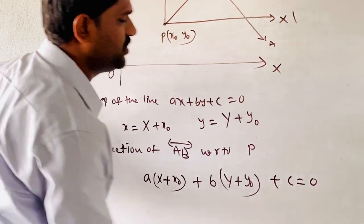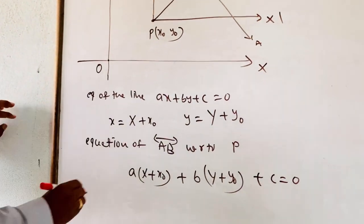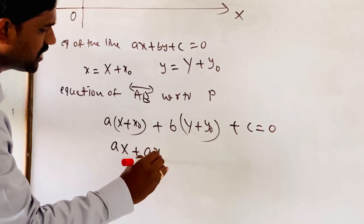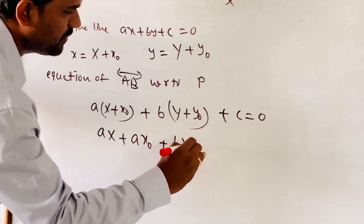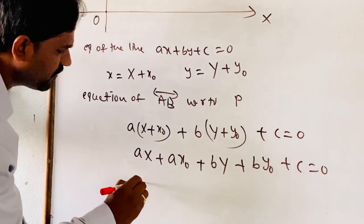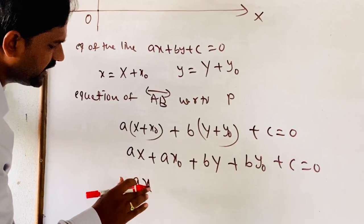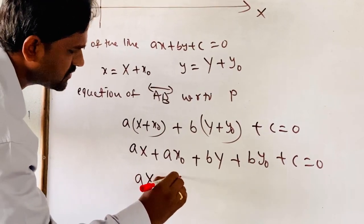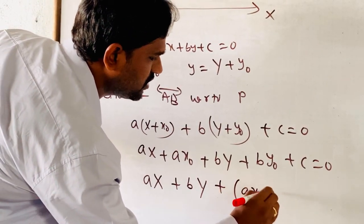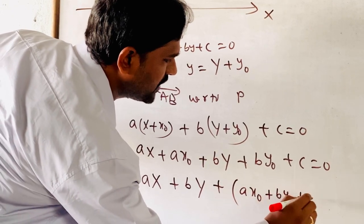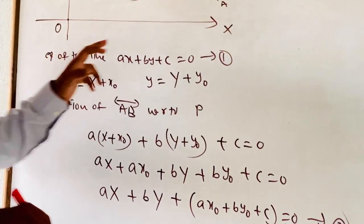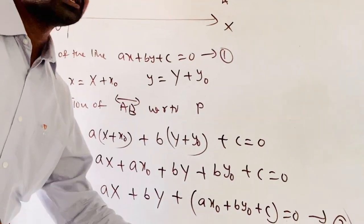Substituting, we get A(X plus X naught) plus B(Y plus Y naught) plus C equals 0, which expands to AX plus AX naught plus BY plus BY naught plus C equals 0. Rearranging, this is written as: A·X plus B·Y plus (AX naught plus BY naught plus C) equals 0. This is Equation 2, and the original is Equation 1.